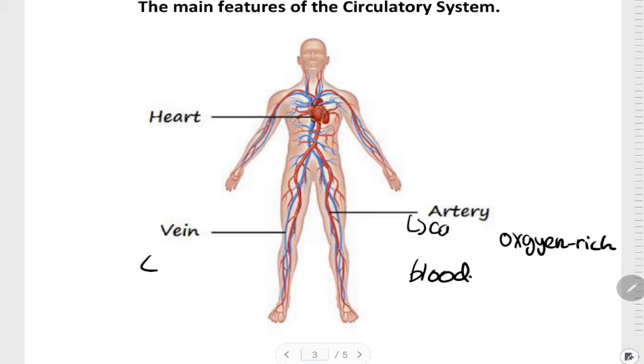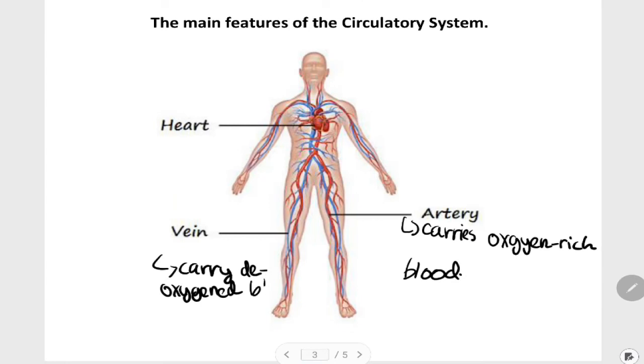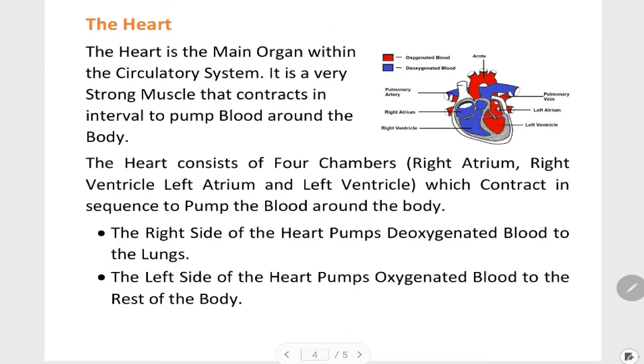And these are the main parts of the circulatory system. Next slide: the heart. The heart is the main organ within the circulatory system. It is a very strong muscle that contracts at intervals to pump blood around the body.